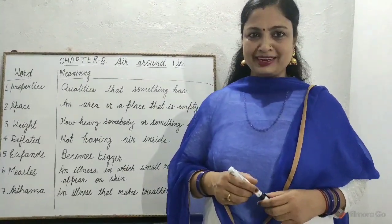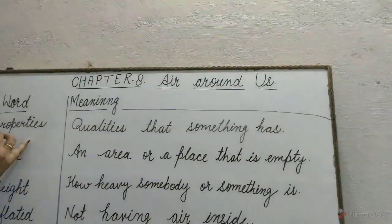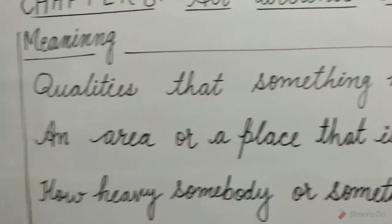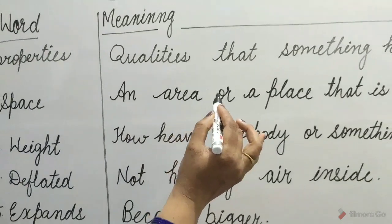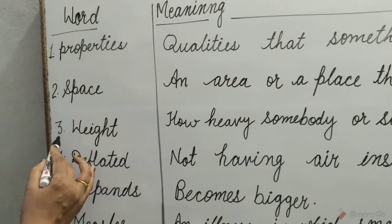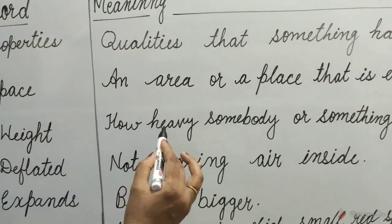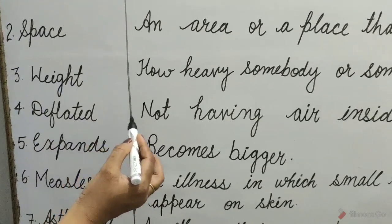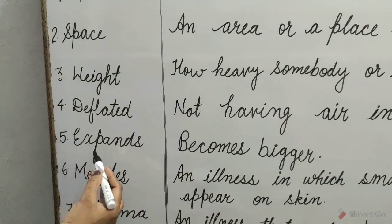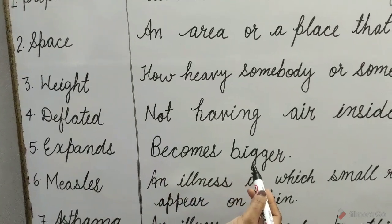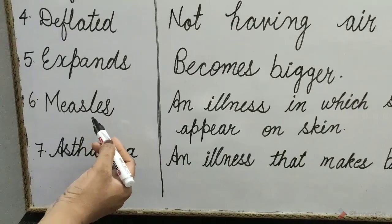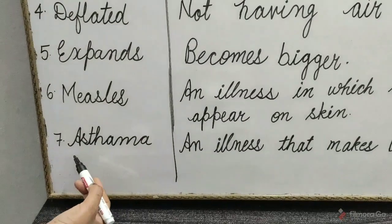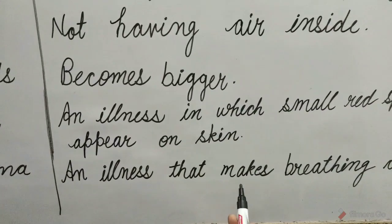Now we learn the word meanings. 1. Properties means qualities that something has. 2. Space means an area or a place that is empty. 3. Weight means how heavy somebody or something is. 4. Deflated means not having air inside. 5. Expands means becomes bigger. 6. Measles means an illness in which small red spots appear on skin. 7. Asthma means an illness that makes breathing difficult.